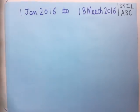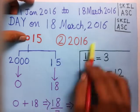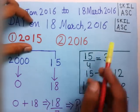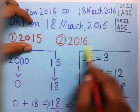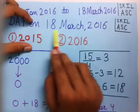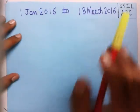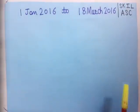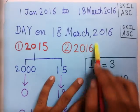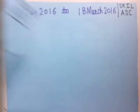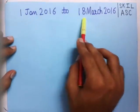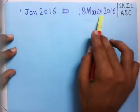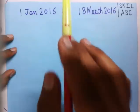Now we come to the second part. For the second part, we have to find the number of odd days in the year 2016 up to the given date, which is 18th March 2016. So we need to find the number of odd days from 1st January 2016 to 18th March 2016.